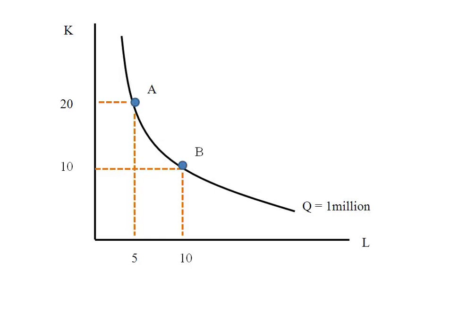Here we have an isoquant for a particular production function and we've set the production level at a million. Point A uses 20 units of capital and 5 units of labor and produces a million units of output. Point B uses 10 units of capital and 10 units of labor and also produces a million units of output.